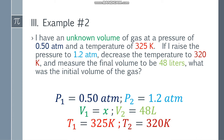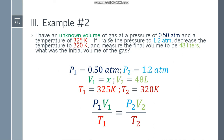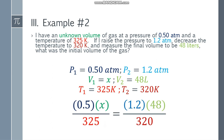Both given temperatures are already in Kelvin and both pressures are in atm, so we're good to go. Let's place the formula: P1 V1 over T1 is equal to P2 V2 over T2. Substituting the values: 0.5 times x over 325 equals 1.2 times 48 over 320.